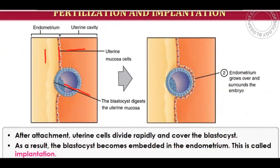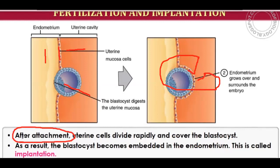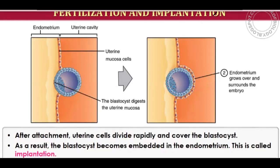The blastocyst gets attached to the uterine wall and the endometrium grows around it. After attachment, the uterine cells divide and cover the blastocyst, embedding it in the endometrium. This process is called implantation and is the first step to pregnancy.